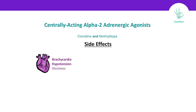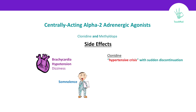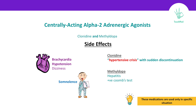The side effects of this medication: in the heart, it causes bradycardia and hypotension, and sometimes dizziness. However, it also causes somnolence. Clonidine has a specific side effect — hypertensive crisis — when someone suddenly stops the medication. Methyldopa can cause hepatitis or a positive Coombs test. Nowadays, we usually don't use this medication anymore, but only in specific situations.